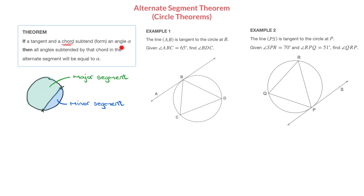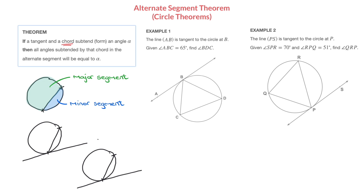When splitting a circle into two using a chord, it creates two segments. Now consider what we're dealing with in this first line: a tangent and a chord which subtend an angle alpha. I'll quickly draw a circle, and let's say I have a tangent to the circle at a point. If I add another point and join it to the point at which the tangent touches the circumference, I'll be creating a chord. This tangent and chord form two angles — one I'll call alpha, and the other I'll call beta.